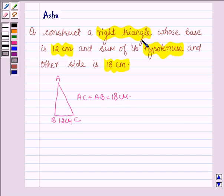So to construct this right triangle we shall follow the construction 11.4 of your book which says to construct a triangle given its base, a base angle and the sum of other two sides. So let us see how we are going to proceed with the construction.